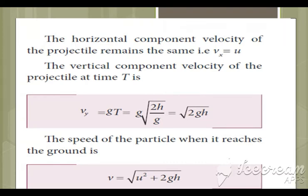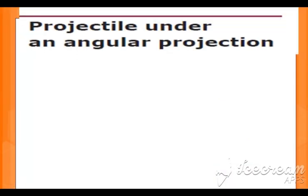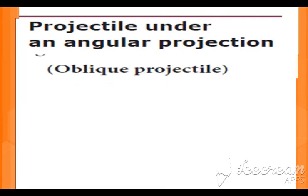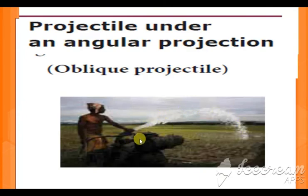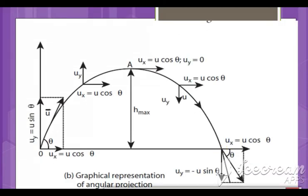We have now covered horizontal range, time of flight, velocity, and speed. Next we study projectile motion under angular projection, also called oblique projection. An example is water coming out of a pipe at an angle — it travels in a projectile motion path.